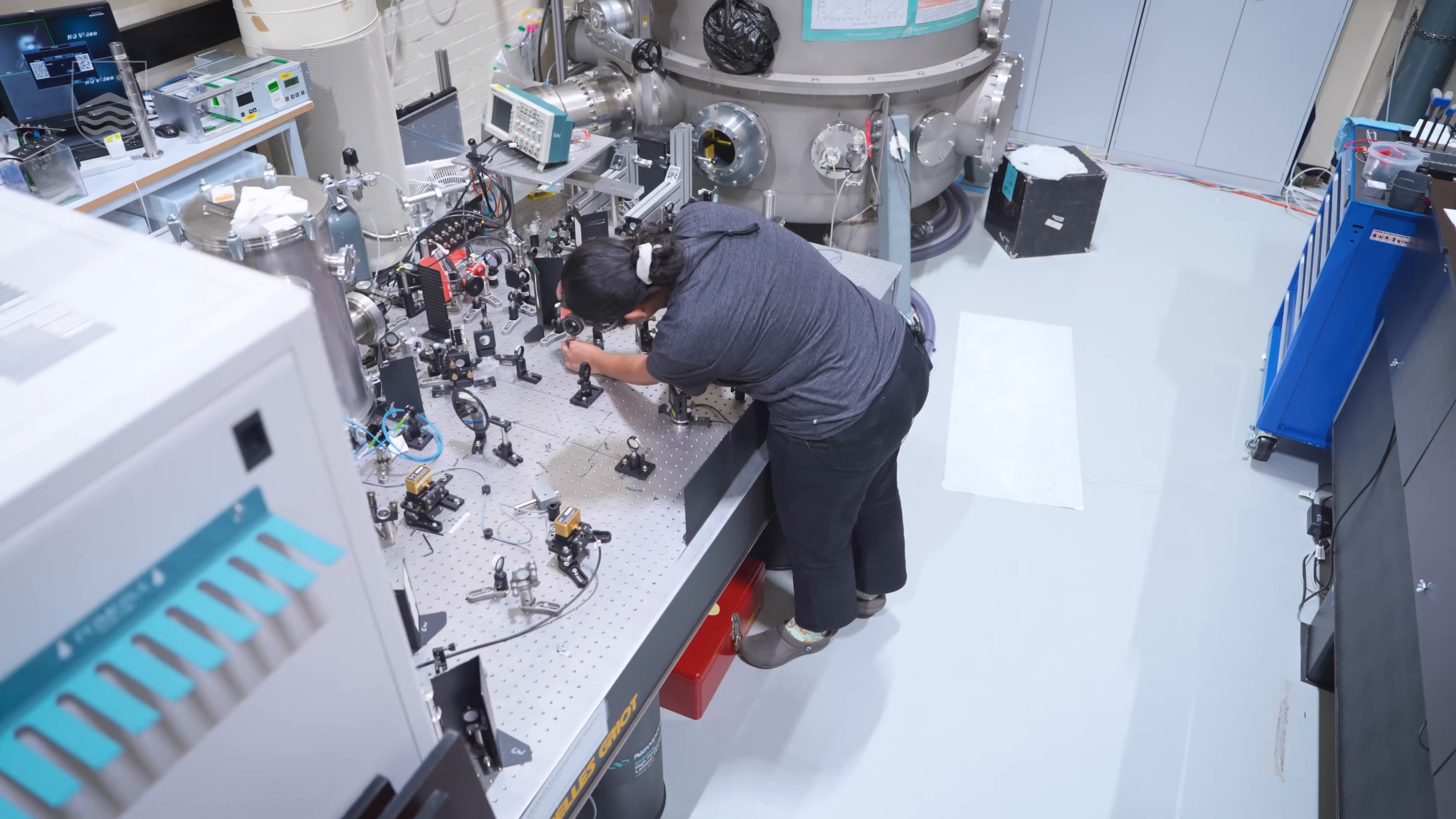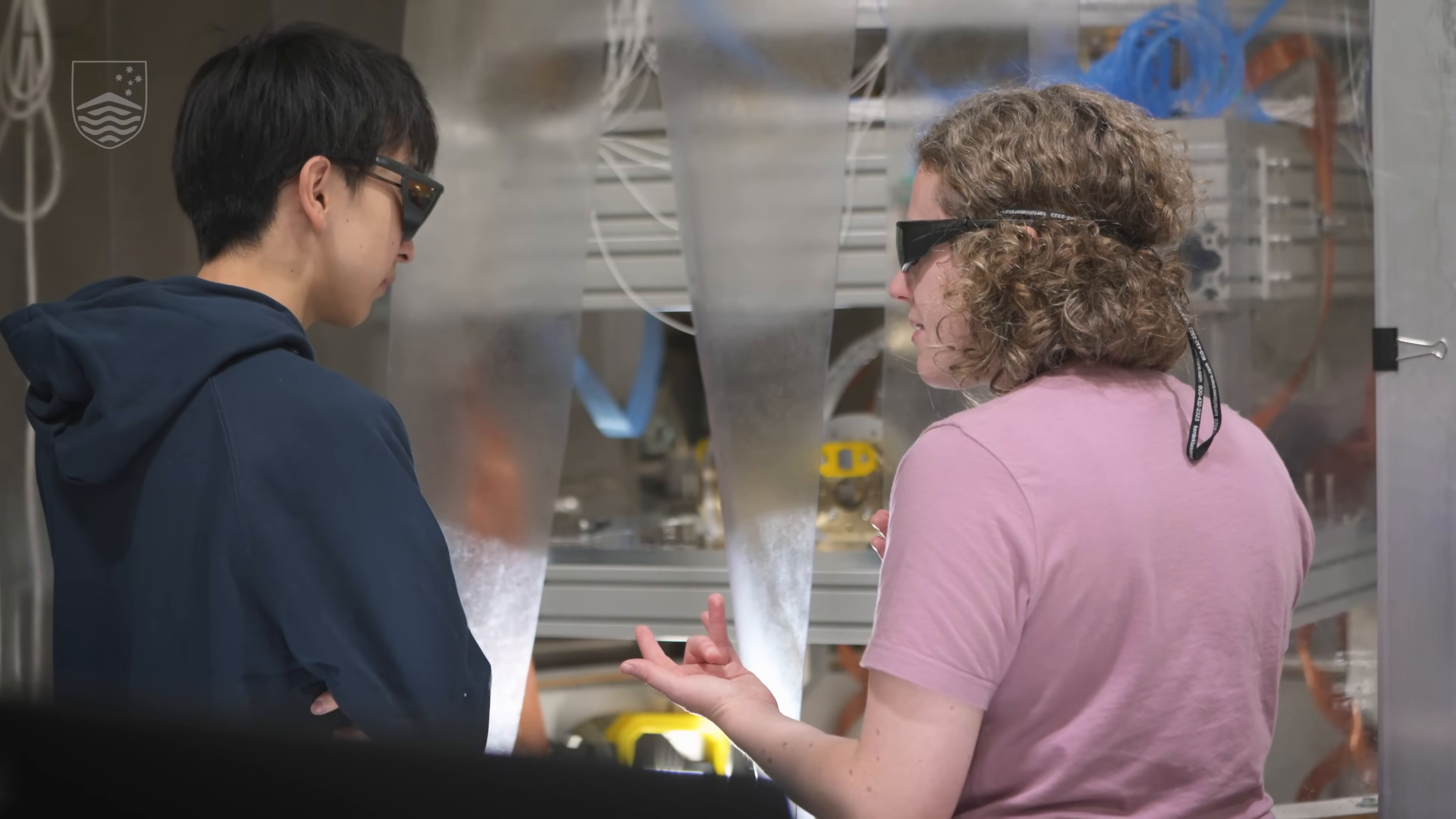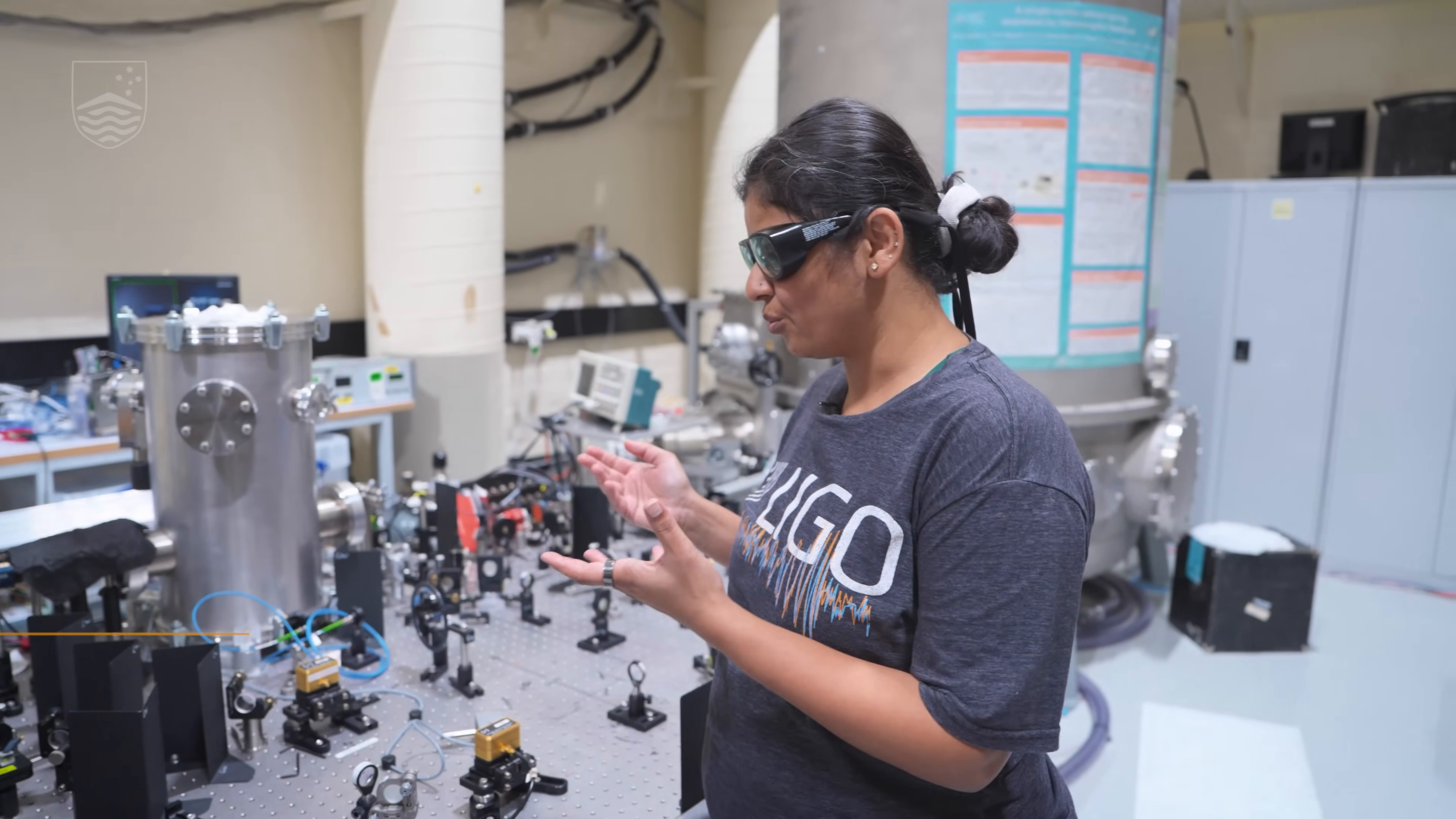So in this lab it's a variety of precision experiments. We're really designing experiments that can probe the universe in multiple ways. What we are looking over here in this experiment is testing materials that are going to be used for the next generation of future gravitational wave detectors.